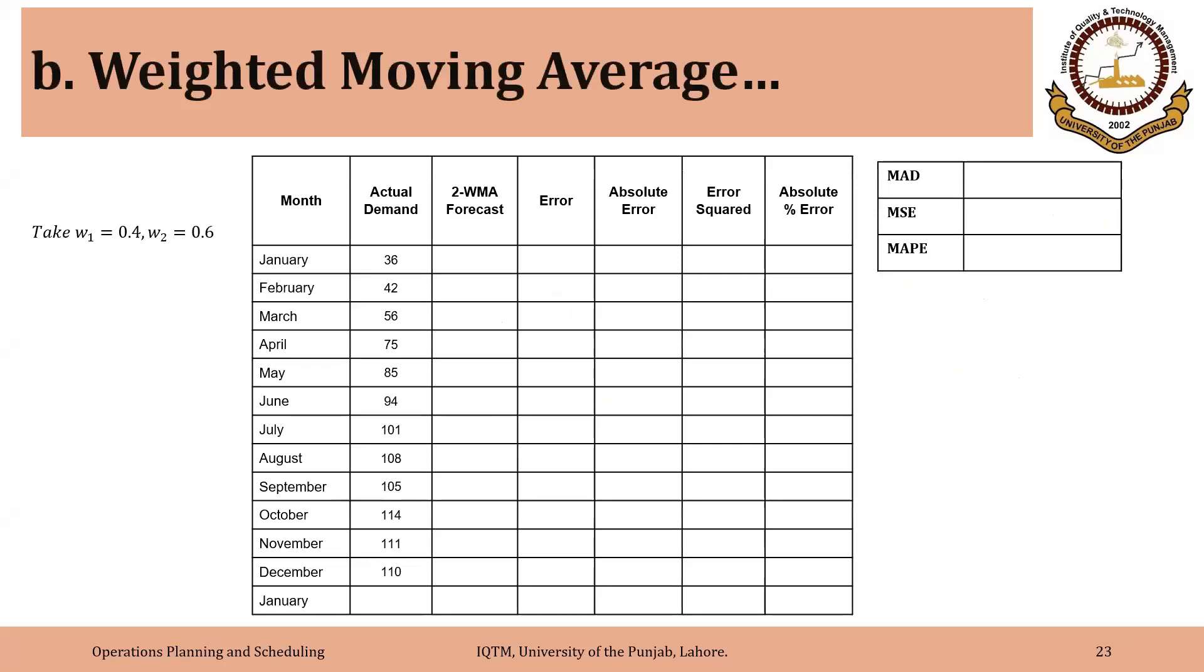So for example, in this case, if we are using n equals 2 and we are taking weight 1 equal to 0.4 and weight 2 equal to 0.6, the forecast for March will be equal to 0.4 into 36 plus 0.6 into 42. So we assign higher weight to the most recent period.